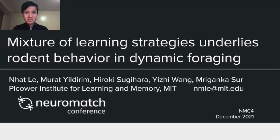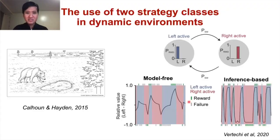Our project aims to characterize short-term and long-term shifts in learning strategies that underlie rodent behavior in dynamic foraging. Foraging is a natural behavior that activates multiple brain regions involved in reward processing, including the striatum, PFC, and ACC.